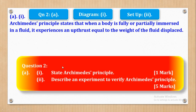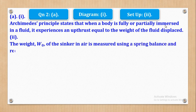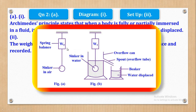Now for Roman 2, they want us to describe an experiment to verify Archimedes' principle — in other words, to verify that the upthrust on a body is equal to the weight of the fluid displaced. The first step is that the weight W₀ of the sinker in air is measured using a spring balance and recorded. A sinker is a body which can sink in a fluid.